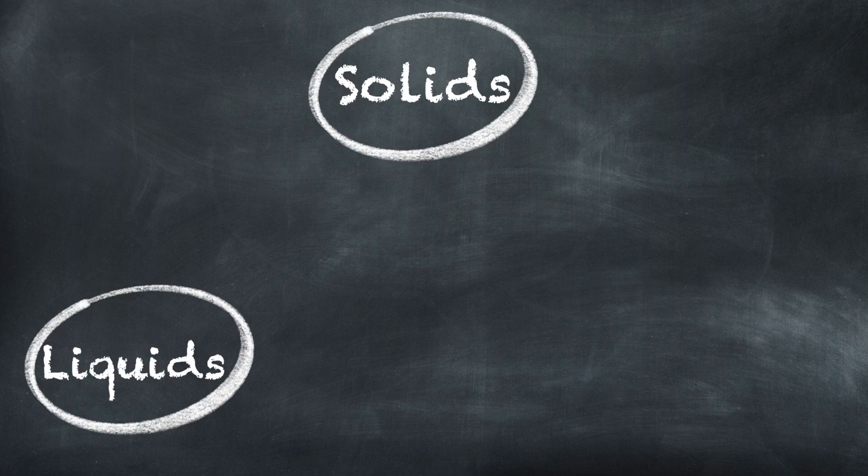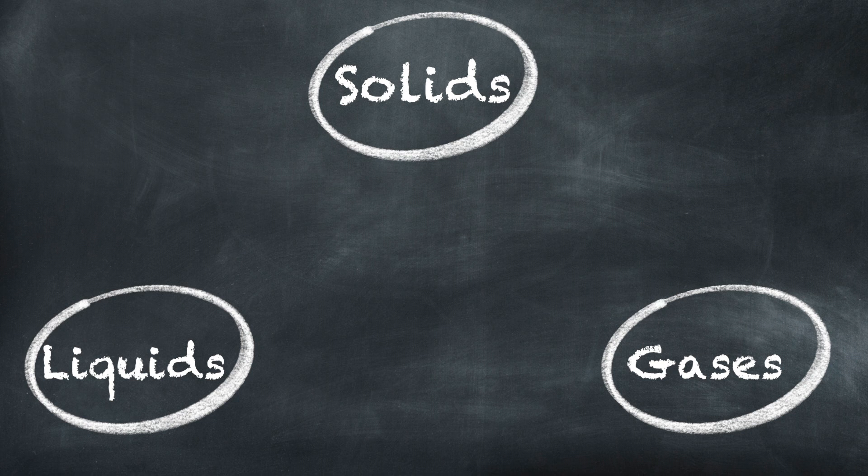As we have learned, there are three states of matter that we're going to go over in this class: solids, liquids, and gases. Solids have a tight, rigid molecular structure — this is what gives them their solid shape. While liquids have a loose molecular structure, they have a fixed volume but variable shape, so they can take the shape of their container.